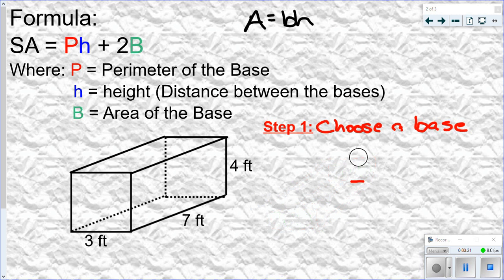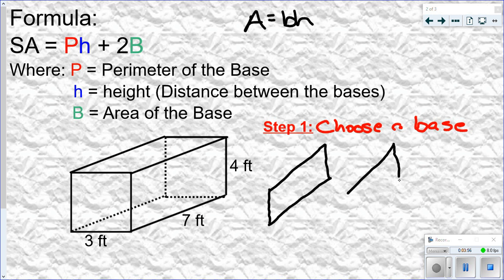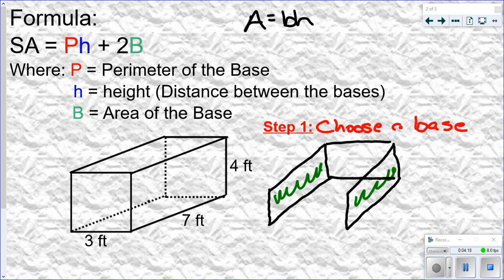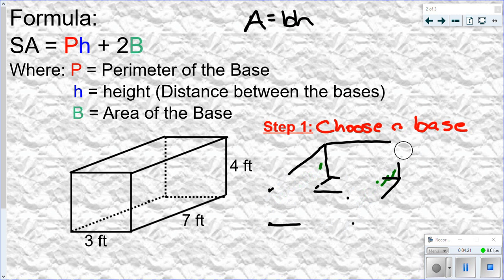With a rectangular prism, you can use any of the sides as your base — it doesn't have to be the front and back. For example, you could use the left side and right side as your base — they're identical shapes — and if you connect the corners together, you'd end up with your prism. Or you could use the top and the bottom as your base.